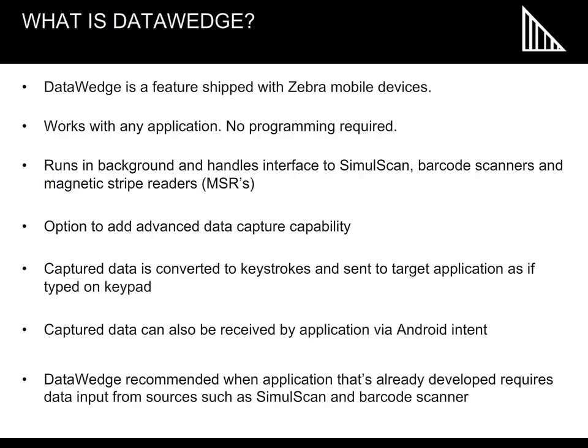Data Wedge runs in the background and handles the interface to SimulScan, barcode scanners, and magnetic stripe readers, with an option to add advanced data capture capability. Captured data is converted to keystrokes and sent to target applications as if typed on the keyboard. Note that captured data can also be received by the application via Android intent.